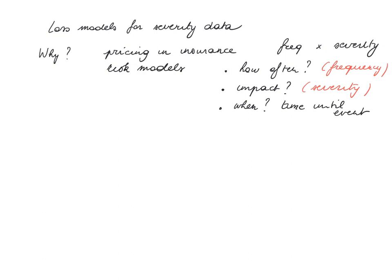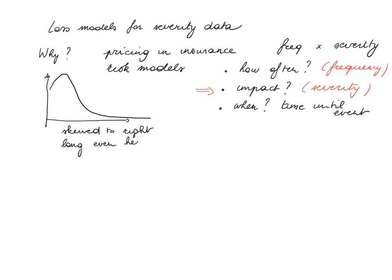These are the typical random variables we're interested in, and today we're going to focus on the second one — the severity. If you are looking for a suitable distribution to handle severities, you have to picture the typical shape of severity data in an insurance context. If you plot the empirical distribution of your claim sizes, your loss data, you would get a distribution that is skewed to the right and typically long-tailed or even heavy-tailed.